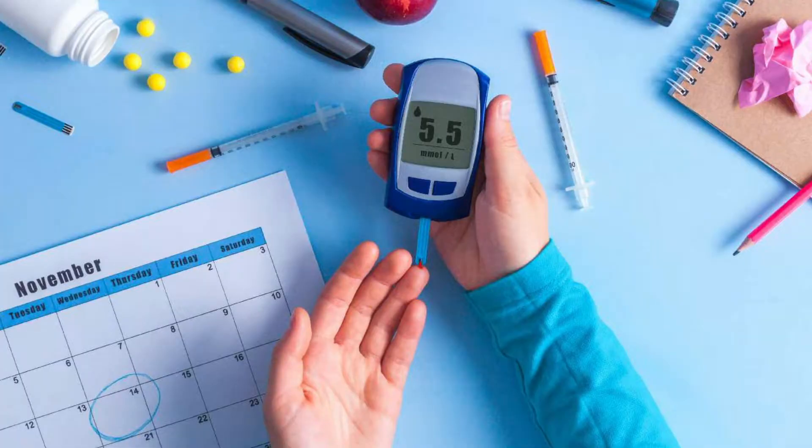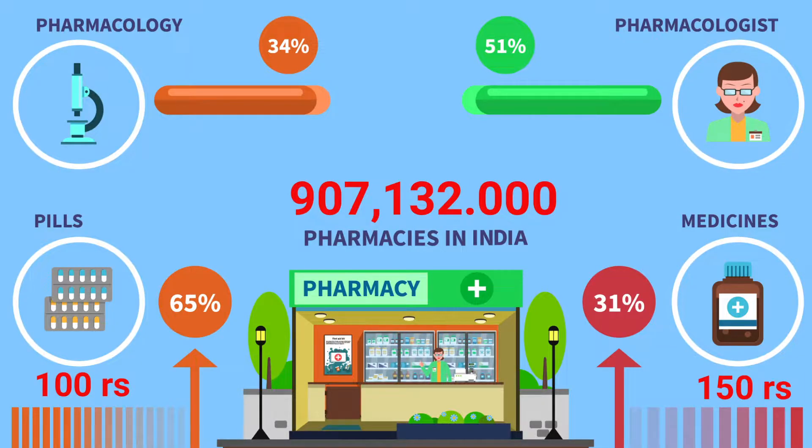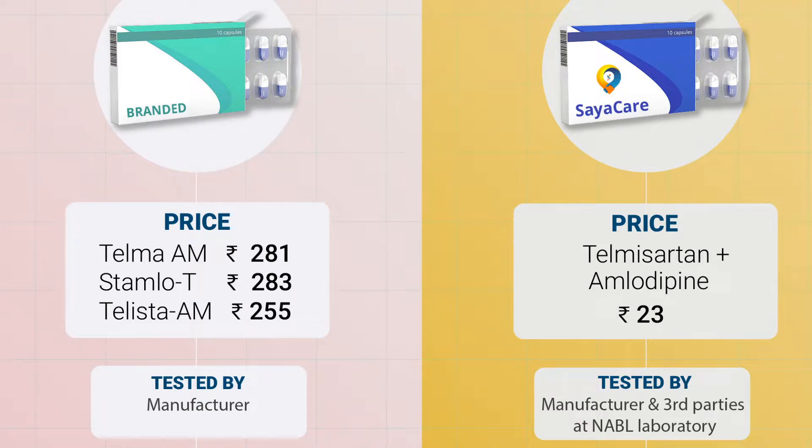Nearly everyone who gets diabetes is prescribed medicine. Although there are many great medicines available to manage and control your diabetes, most people in India take their medicine from large pharmaceutical companies who charge a hefty price for it, even though there are exactly the same substitutes made with the exact same salt, which can be up to 90% cheaper.